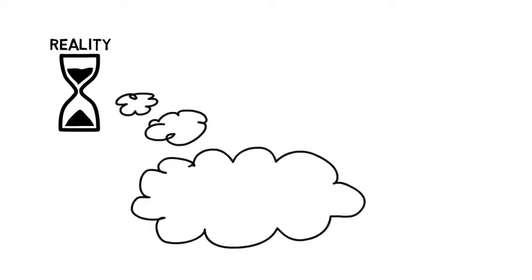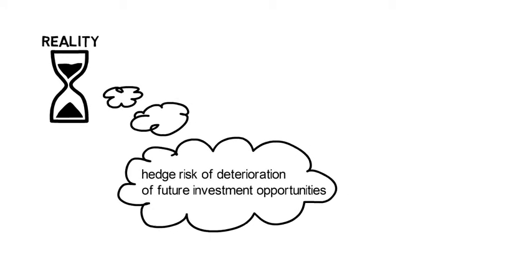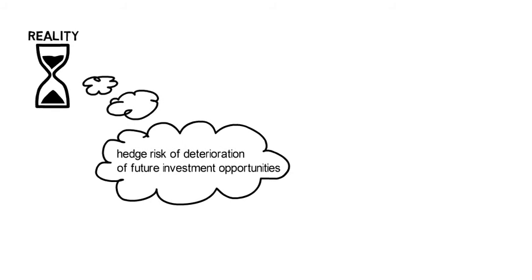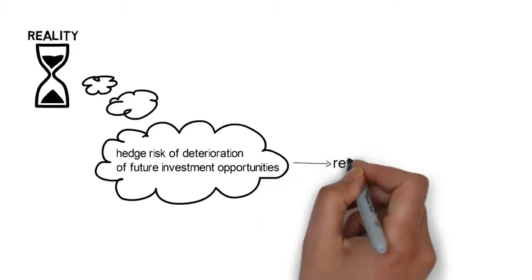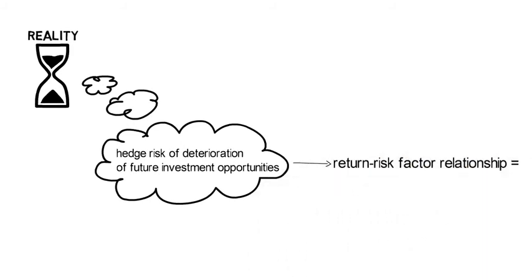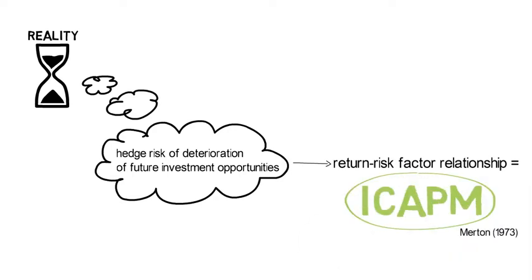In reality, investors make investment decisions on a continuous basis. That implies that a risk-averse investor wants to hedge the risk that future investment opportunities deteriorate. The resulting return-risk-factor relationship is known as the ICAP-M and was formally introduced by Merton in 1973.